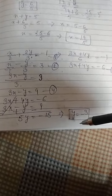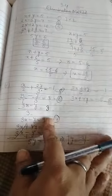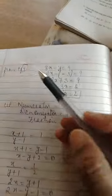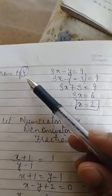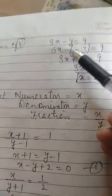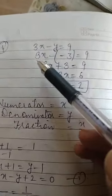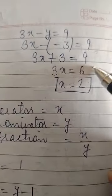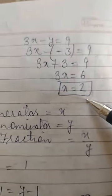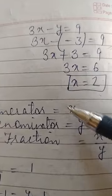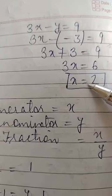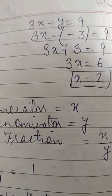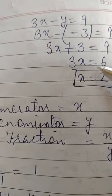So 5y = -6 - 9 = -15, therefore y = -3. Now substitute y = -3 into equation number 4: 3x - y = 9 becomes 3x - (-3) = 9, so 3x + 3 = 9, giving x = 2. Therefore x = 2 and y = -3.